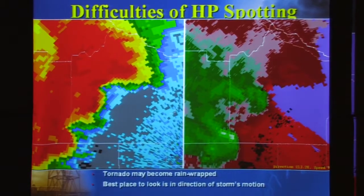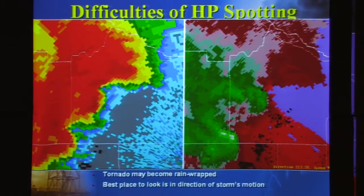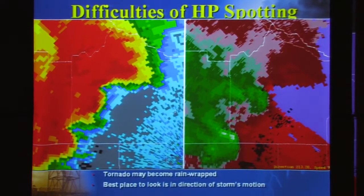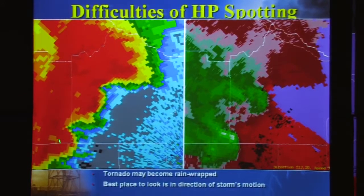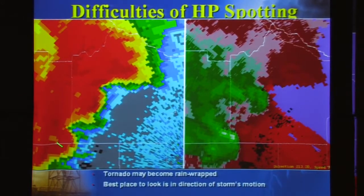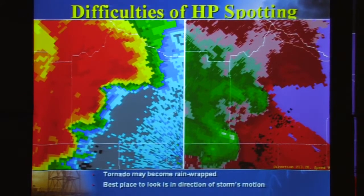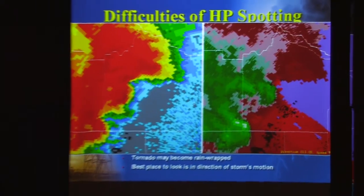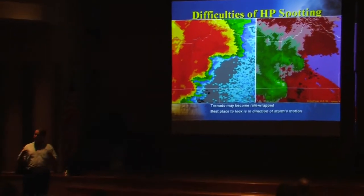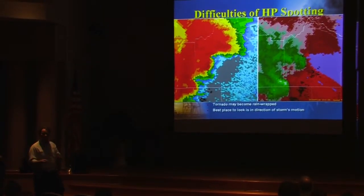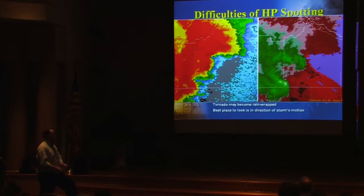This storm's forward flank downdraft, and again they're kind of glommed together as one. It's hard to make out a distinction between the two. South of the inflow notch here is that southern storm's rear flank downdraft. But what's nice is when you take a look at the velocity data, it can help pinpoint features for you quite nicely.